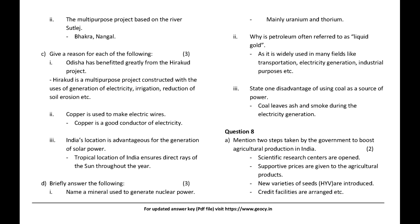Give a reason: Odisha has benefited greatly from the Hirakud project. Answer: Hirakud is a multipurpose project used for generation of electricity, irrigation, and reduction of soil erosion. Give a reason why copper is used to make electric wires — copper is a good conductor of electricity.